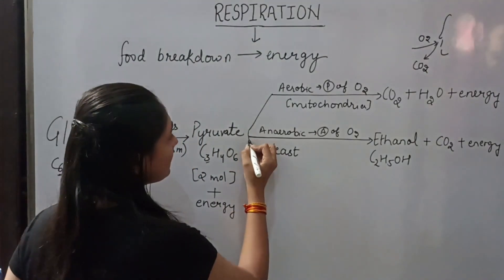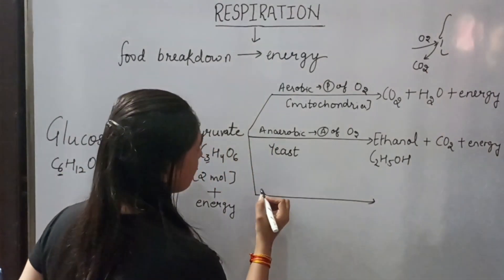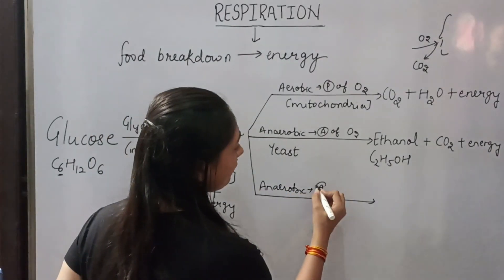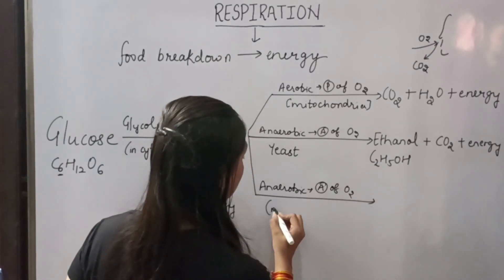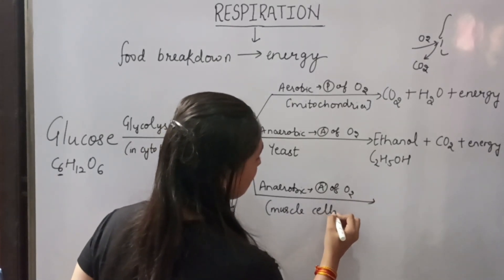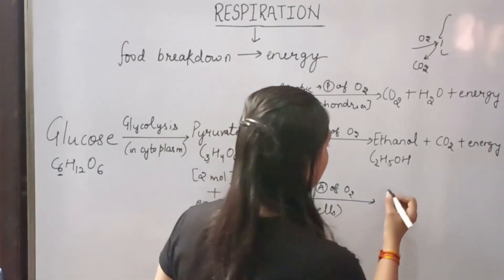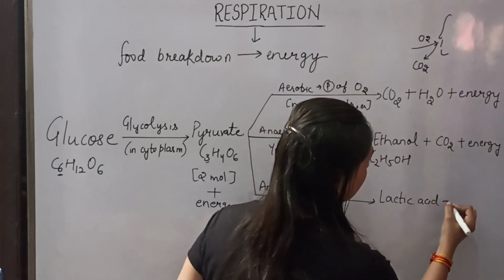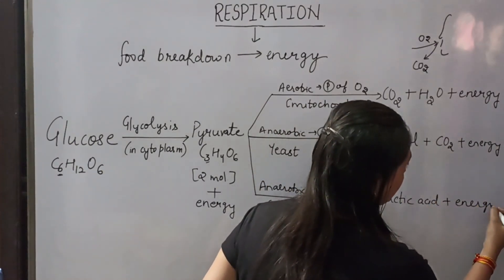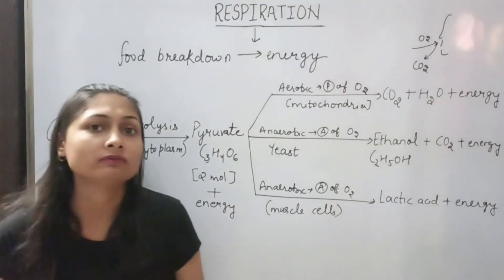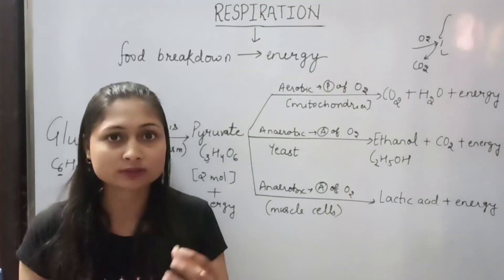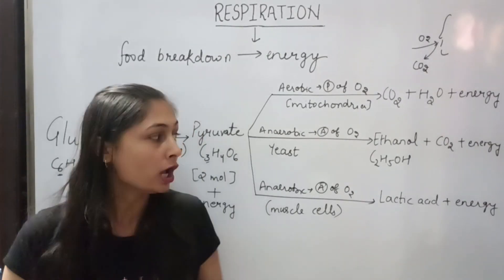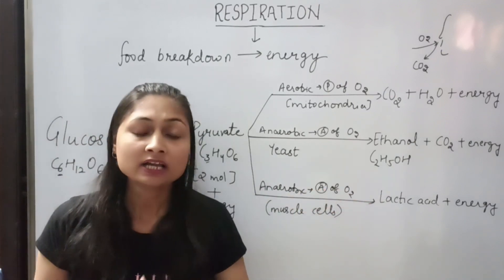In the third case, we will see in the human body, in the muscle cells, anaerobic respiration occurs in the absence of oxygen. So here, in the muscle cells, the end products will be lactic acid plus energy. In the muscle cells, when we do a lot of heavy exercise, we cannot supply proper oxygen to the muscles. At that time, the muscle cells will perform anaerobic respiration and there will be formation of lactic acid.